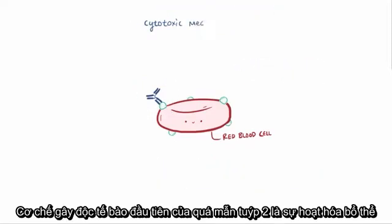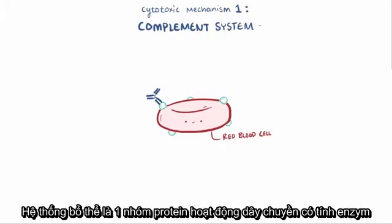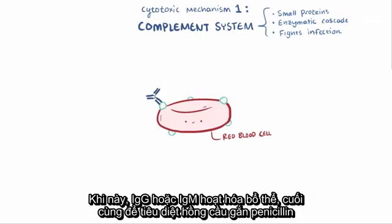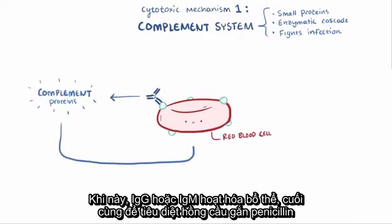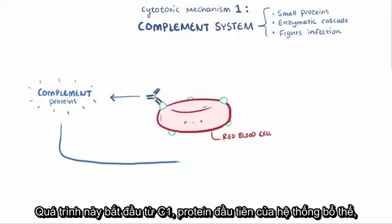The first cytotoxic mechanism of type 2 hypersensitivity is activation of the complement system. The complement system is a family of small proteins that work in an enzymatic cascade to fight off bacterial infections using a variety of mechanisms. In this case, the IgG or IgM antibodies activate complement proteins, which ultimately will kill the red blood cell bound to penicillin, which is now complexed with IgG or IgM.